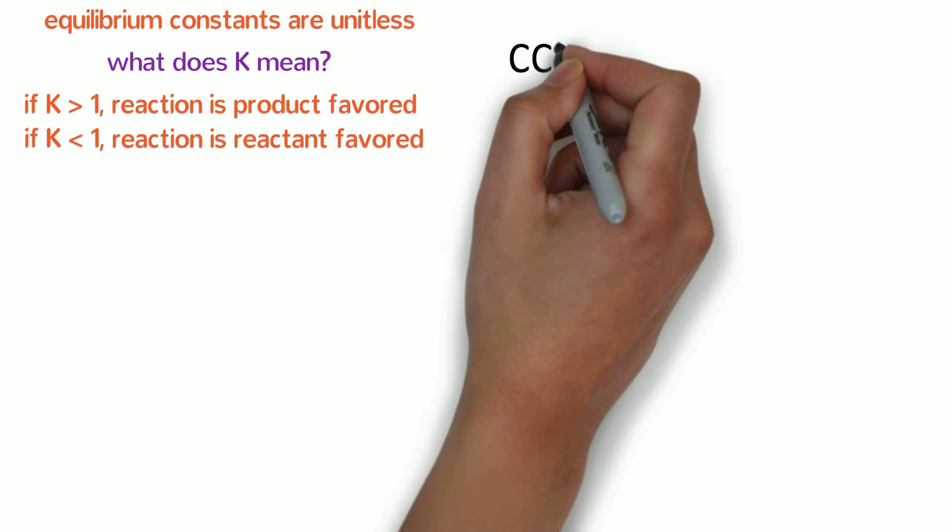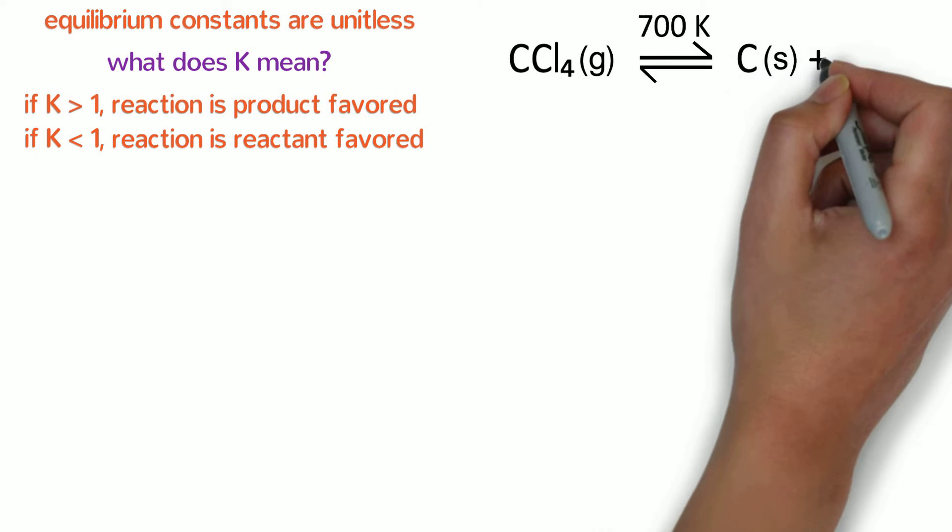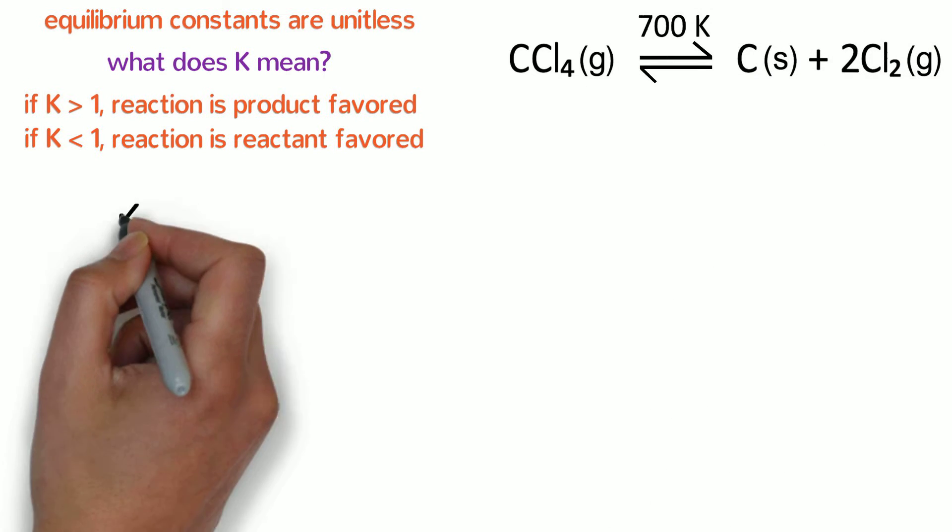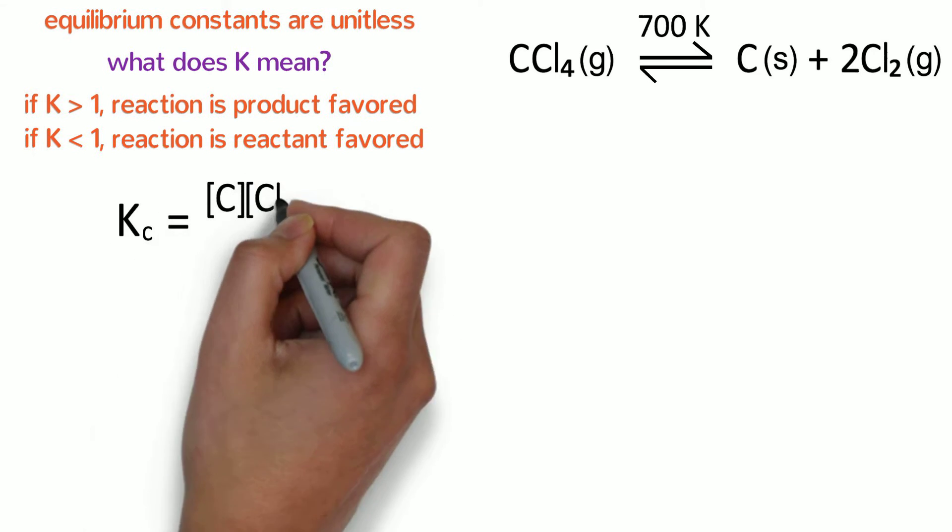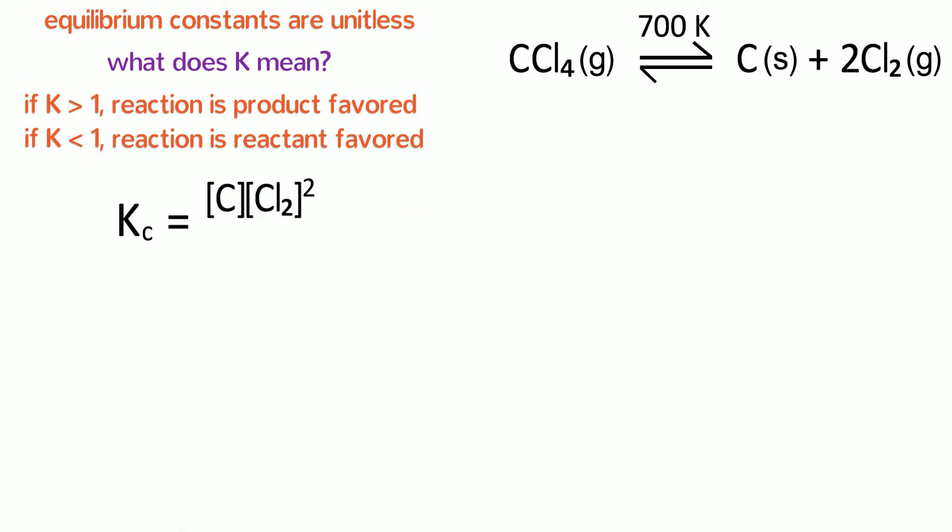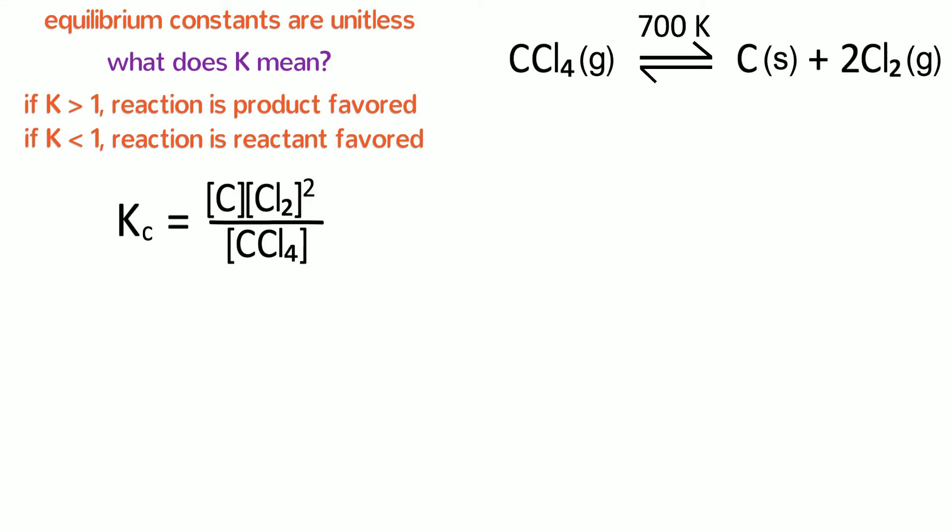Let's consider another reaction. Carbon tetrachloride decomposes at 700 Kelvin to make elemental carbon and chlorine gas. The concentration equilibrium constant of that reaction should be equal to the molarity of the products raised to the power of their coefficients divided by the molarity of the reactant raised to the power of its coefficient.